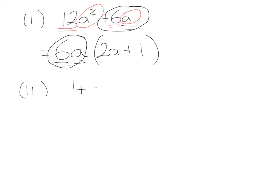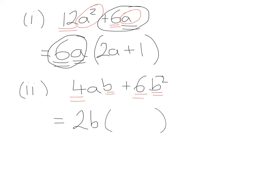Let's have a look at another example: 4ab + 6b². Same process — look at the numbers then the letters. The highest common factor between 4 and 6 is 2. Then between all the letters: the a isn't in common between both terms, but there is a b and a b². We can only take the highest value in common between both terms, so we go with b. So we bring 2b outside the bracket.